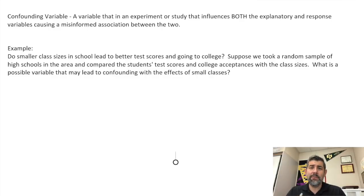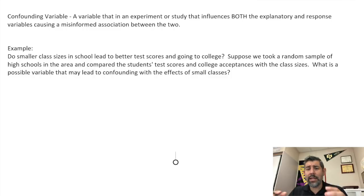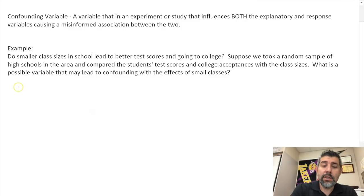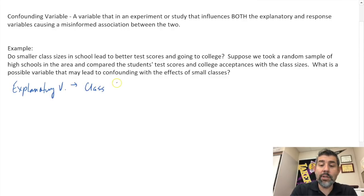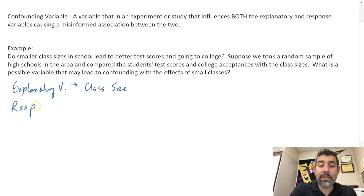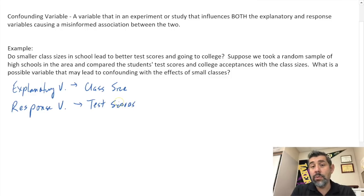What might be something not in my study that could lead to confounding of the smaller class sizes? Let's first talk about the explanatory variable. The explanatory variable here is going to be class size — this is what's going to explain my response, which is the data I collect. My response variables are going to be test scores and college acceptances.